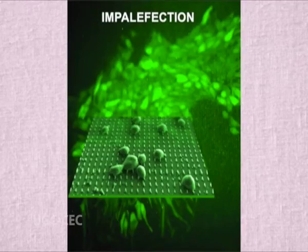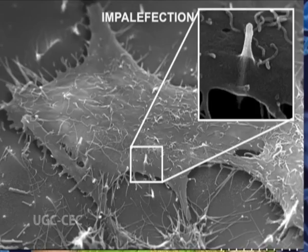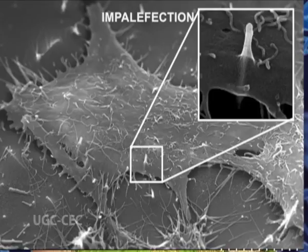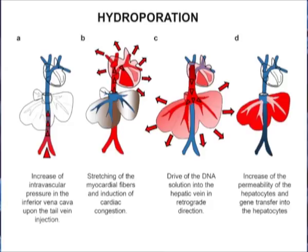Impalement infection is a gene transfer method using nanomaterials. Nanofibers or nanotubes are synthesized and placed on a chip; these needle-like projections are pressed against the tissue, the cells get impaled by the nanostructures, and the gene is transferred. Hydrodynamic gene transfer or hydroporation is usually done for animals like mice and rats. It involves injection of a large volume of plasmid DNA solution into the tail vein; the increased hydrodynamic pressure drives the solution to the liver and kidney, leading to the development of pores in the epithelium of liver cells. These pores facilitate the entry of fluid inside the cells, resulting in gene transfer.